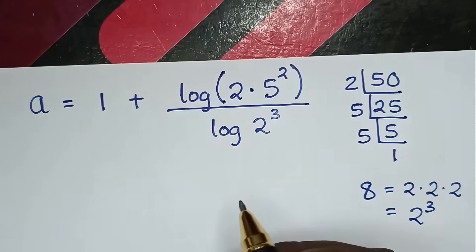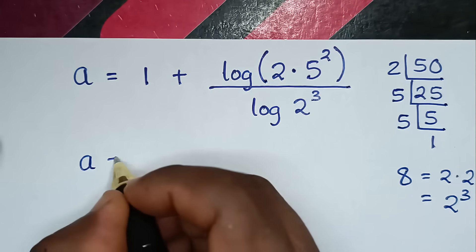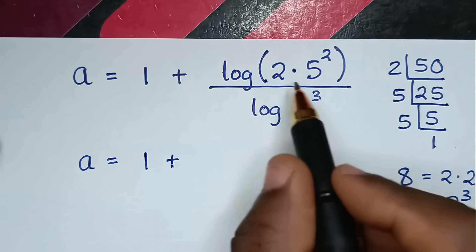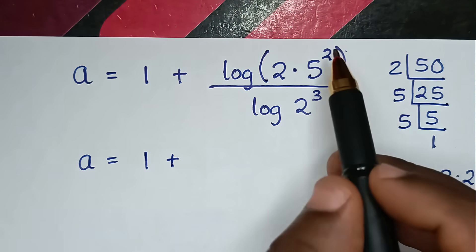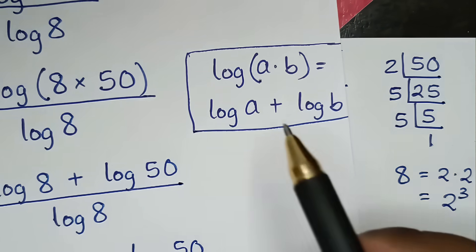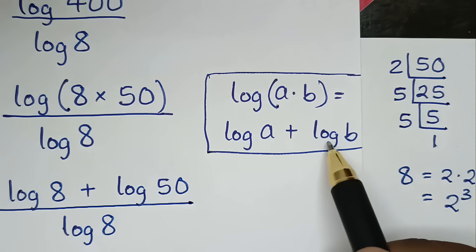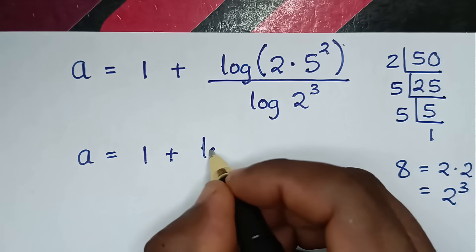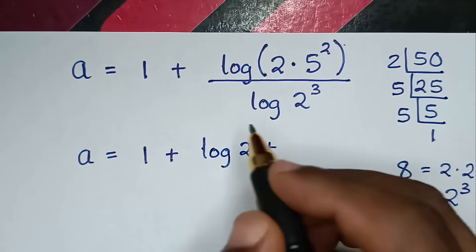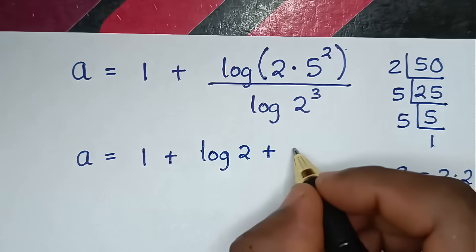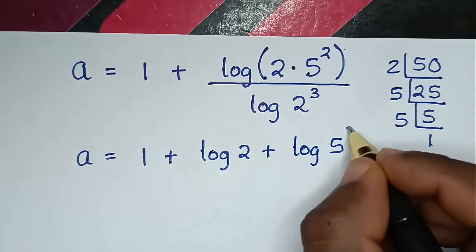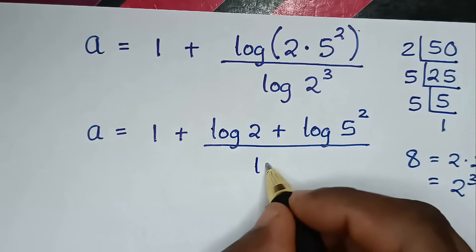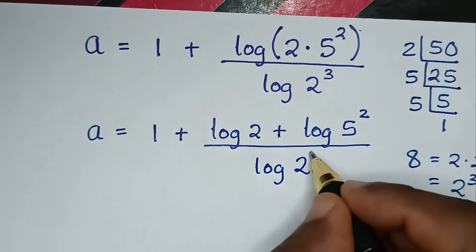Then, in the next step, it will be a is equal to 1 plus log of 2 times 5 squared. This part is in the form of the rule log(a·b) = log a + log b, so we apply this form: it will be log of 2 plus log of 5 squared, over log of 2 power of 3.